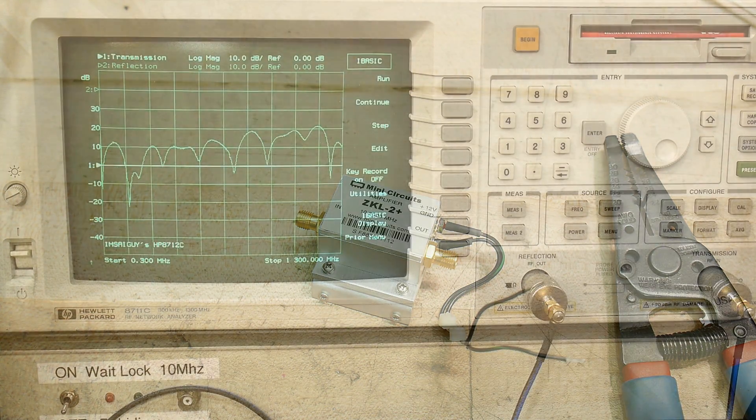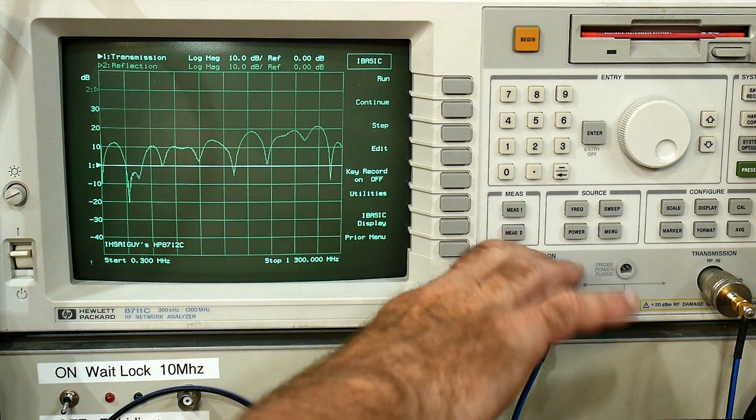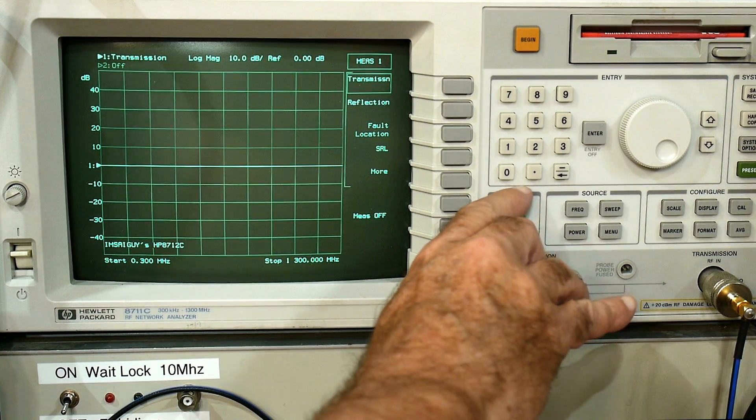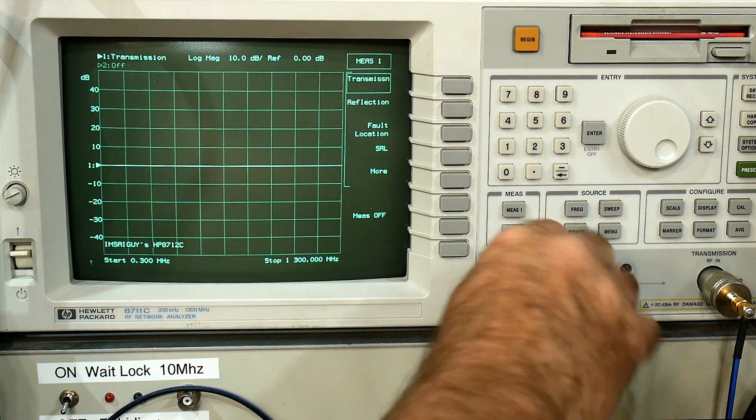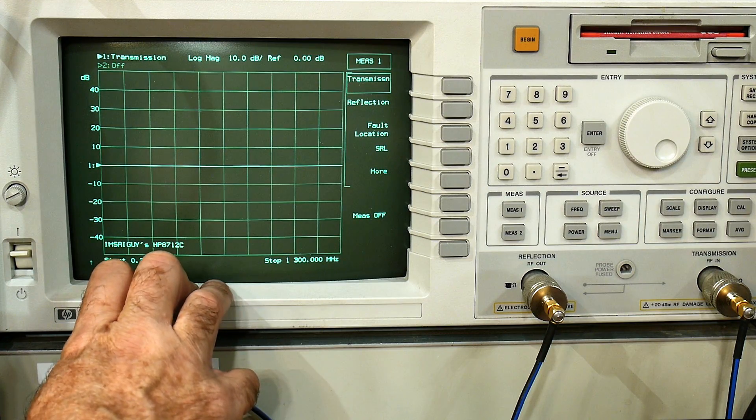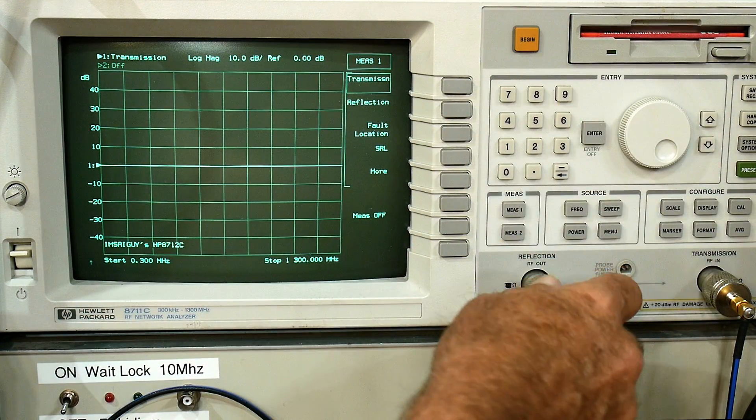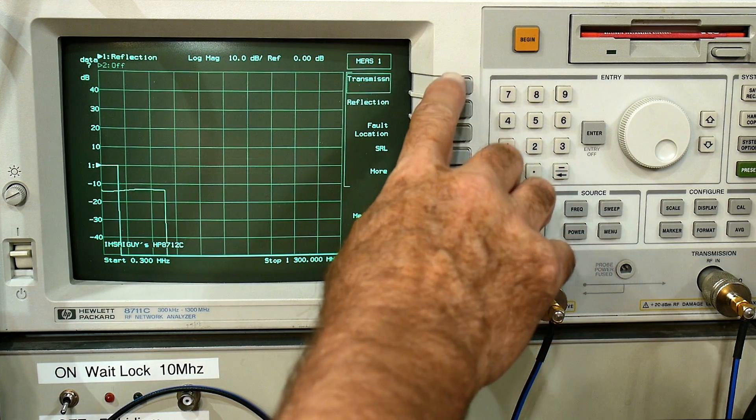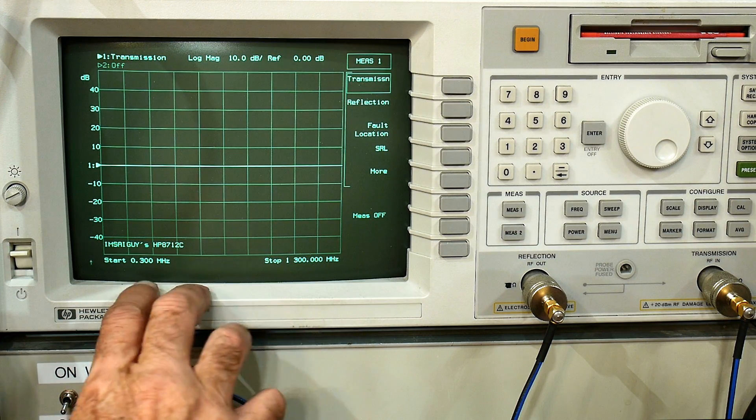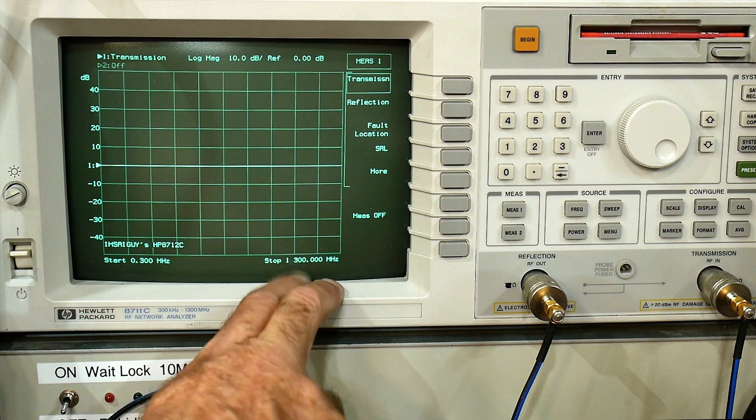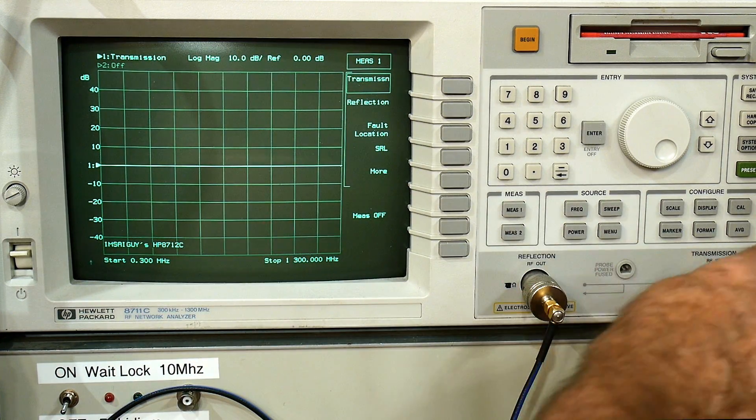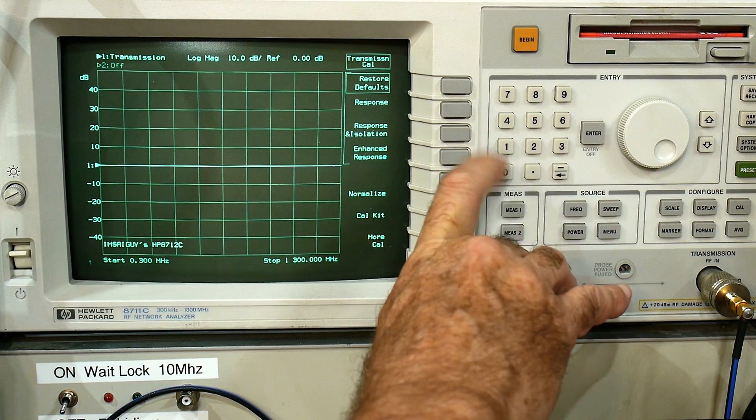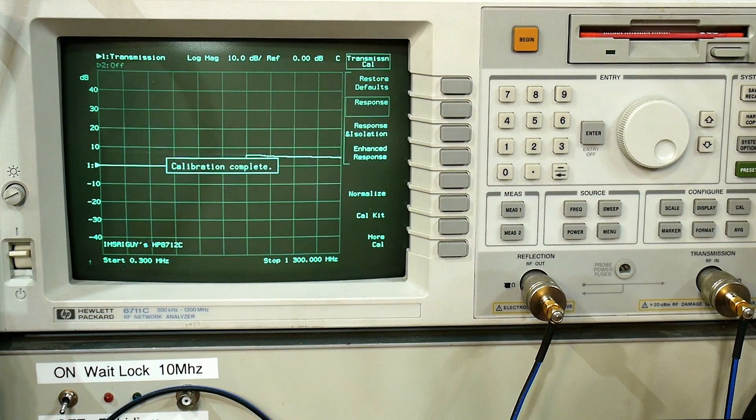All right, so let's turn this thing on. Measure one transmission is what we want, and we'll take a look at the return loss as well. So this one's transmission, this one's reflection. We're going to sweep here from full range 300 kilohertz to 1.3 gigahertz. We have a shorting cable in there already, so let's do a cal. We'll do a response measurement and there we go, we're getting zero.